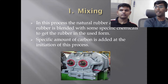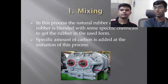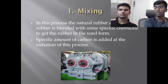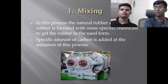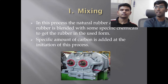Steel-belted radial tyres can contain as many as 10 different components added to the rubber compound. These compounds include antioxidants, anti-ozonants, curing agents, elastomers, sulfur, reinforcing agents, cobalt, magnesium oxide, rubber polymers, calcium carbonate, zinc oxide, and carbon black.